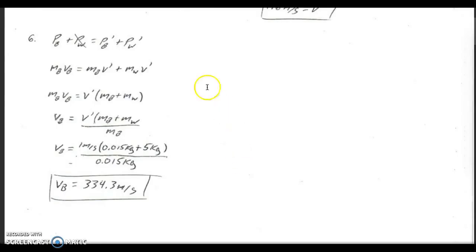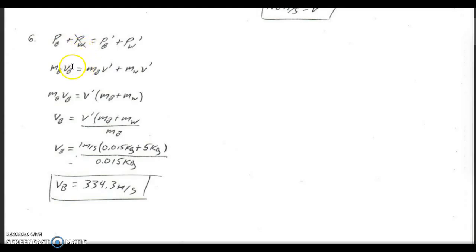For number 6, a 0.015 kilogram bullet is shot into a 5 kilogram wooden block standing on a frictionless surface. The block with the bullet in it acquires a velocity of 1 meter per second as it slides off after the bullet hits it. We write down our conservation of momentum equation: the momentum of the bullet plus the momentum of the wooden block equals their combined momentum after the collision. Initially, the wooden block is just sitting on the table — it's not moving, so it has no initial momentum. The bullet and block stick together and move off with the same speed.